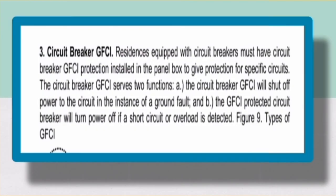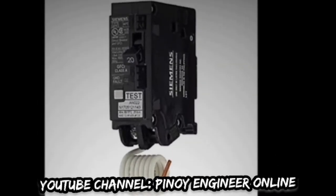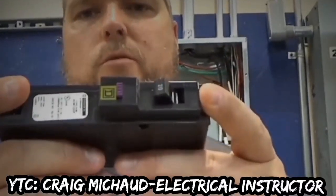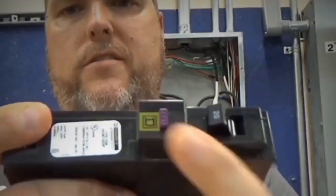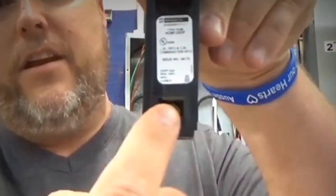Number three: Circuit Breaker GFCI. Residences equipped with a circuit breaker must have Circuit Breaker GFCI protection installed in the panel box to give protection for a specific circuit. The Circuit Breaker GFCI serves two functions: first, it will shut off power to the circuit in the instance of a ground fault; and second, the GFCI circuit breaker will turn power off if a short circuit or overload is detected. On a GFCI breaker — this happens to be a Square D — this is a 20-amp breaker. You have your trip button here, which is purple on this one and says 'trip' so you can't miss it. On this long end is where the mechanism is for the ground fault protection.